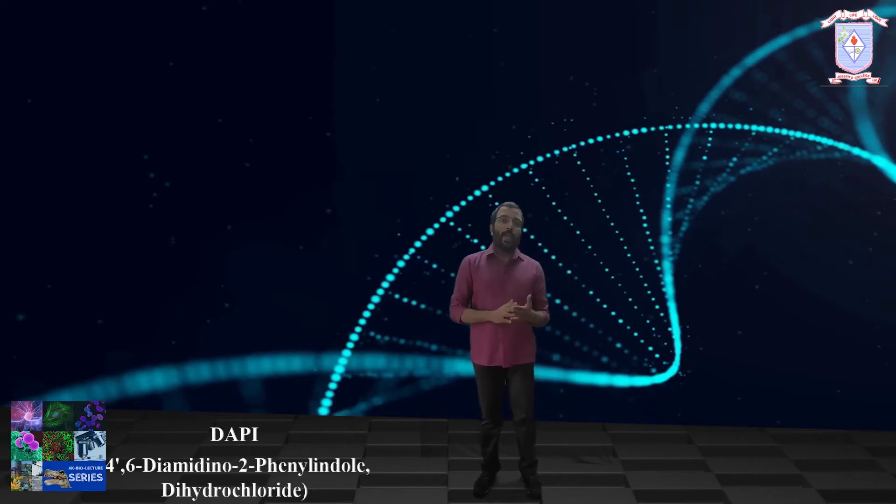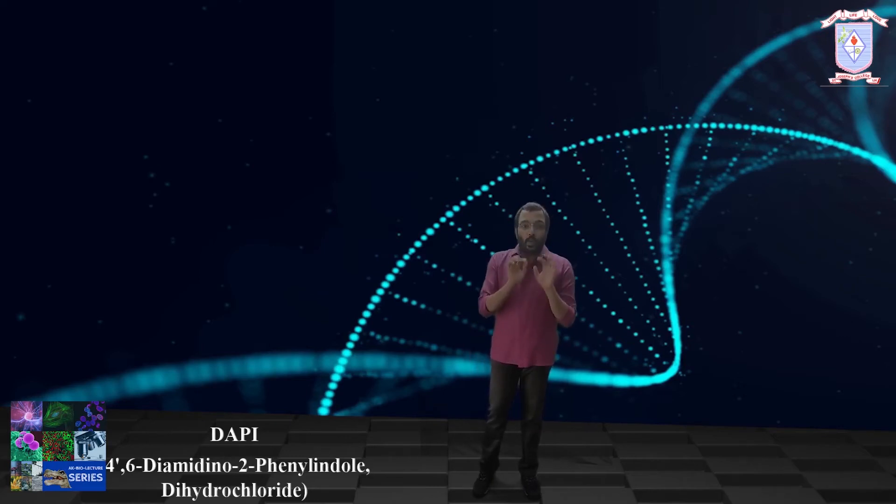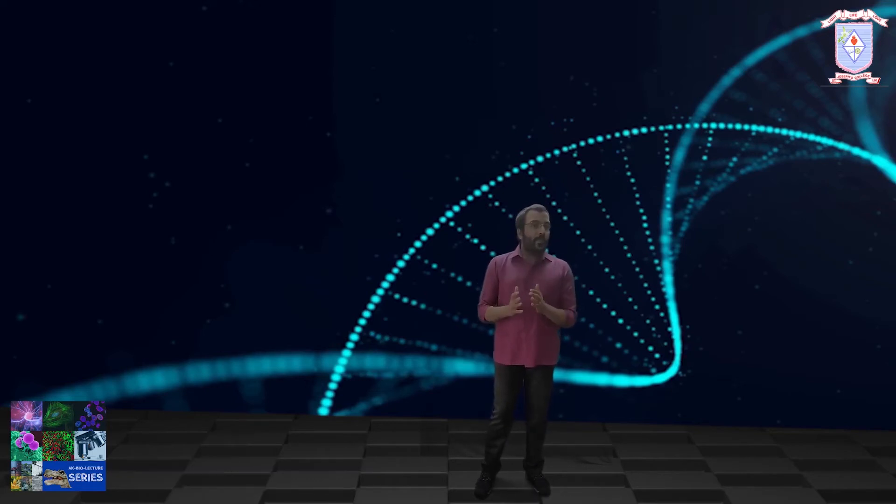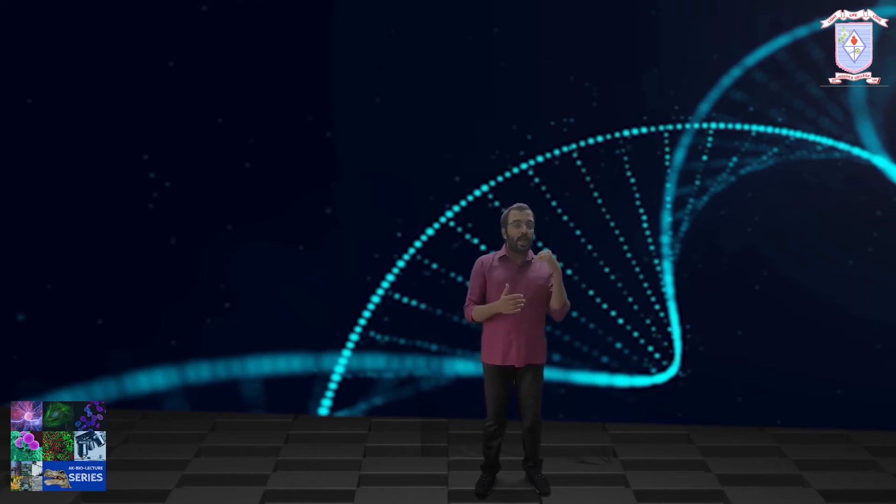The full form of DAPI is 4,6-diamidino-2-phenylindole dihydrochloride. DAPI was first synthesized in 1971 in the laboratory of Otto Damm as part of a search for drugs to treat trypanosomiasis.